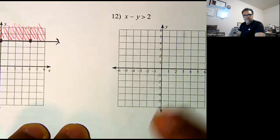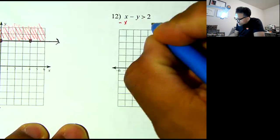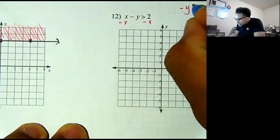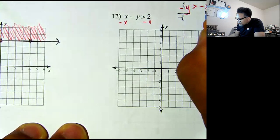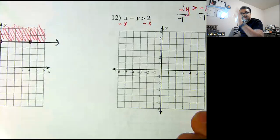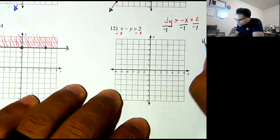Number 12. I need it in slope-intercept form, so I'm going to subtract x from both sides first. I'm left with negative y is greater than negative x plus 2. My y has an imaginary negative 1 in front, so I have to divide by negative 1, all terms by negative 1, because that y needs to be positive.